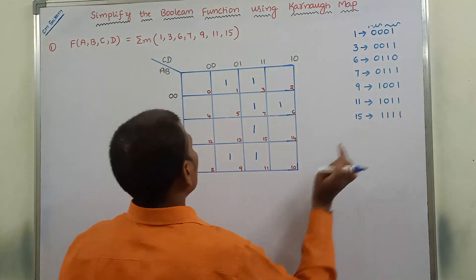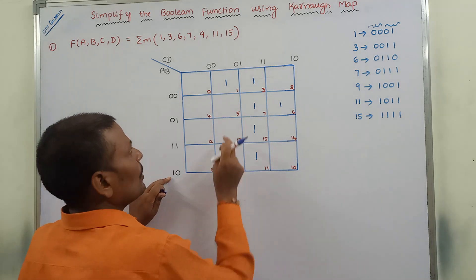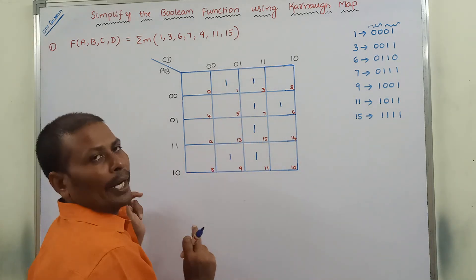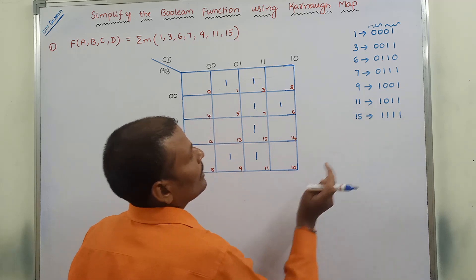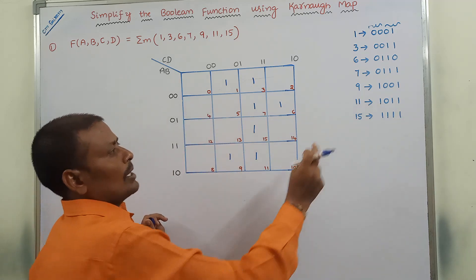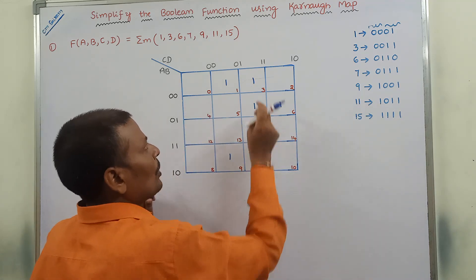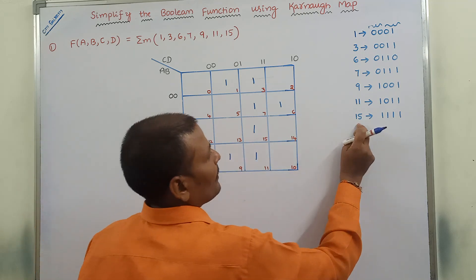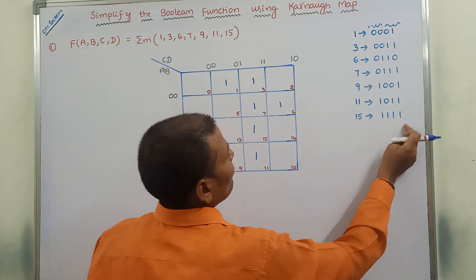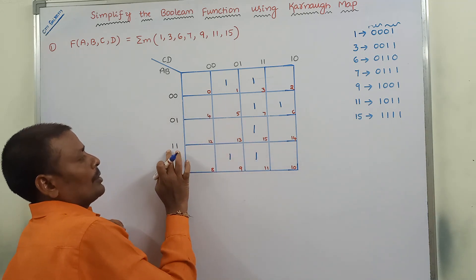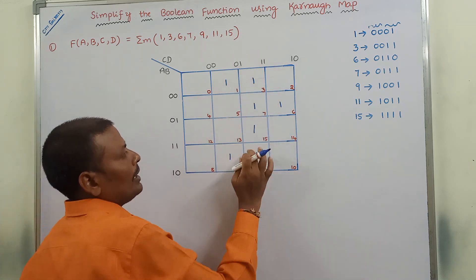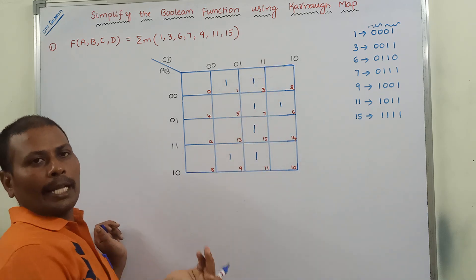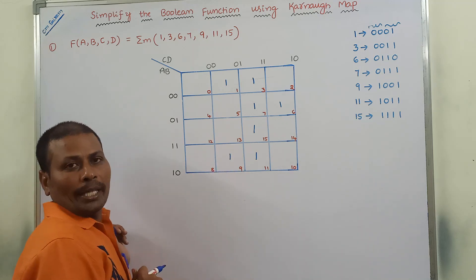Min term 9 is 1001: row 10, column 01 — place 1. Min term 15 is 1111: row 11, column 11 — place 1. This is another way of placing 1s in the four-variable Karnaugh map for the corresponding min terms.